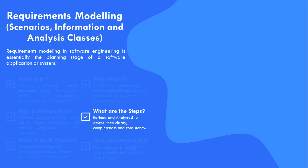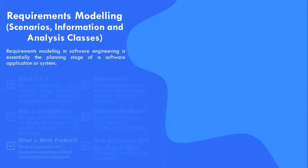As the stakeholders define the problem, negotiations occur: what are the priorities, what is essential, what is required. Finally, the problem is specified in some manner and then reviewed or validated to ensure that both the software team and the stakeholders understand the problems and that both coincide. The intent of requirements engineering is to provide all parties with a written understanding of the problem.